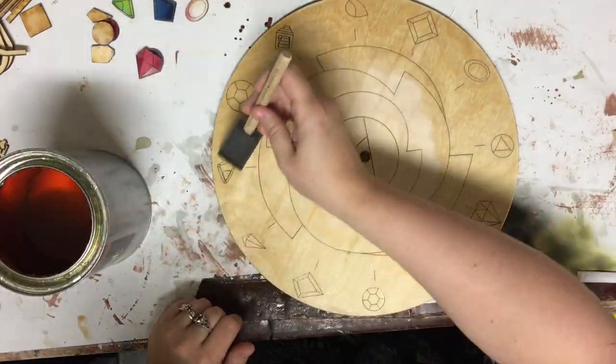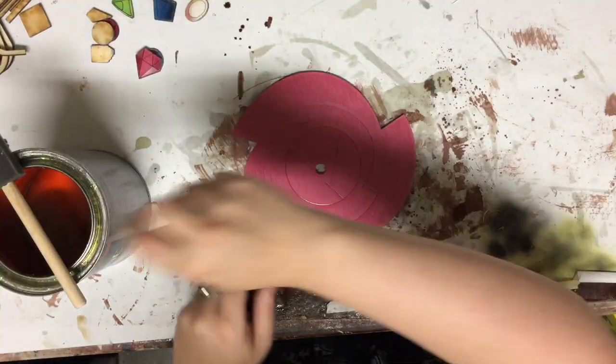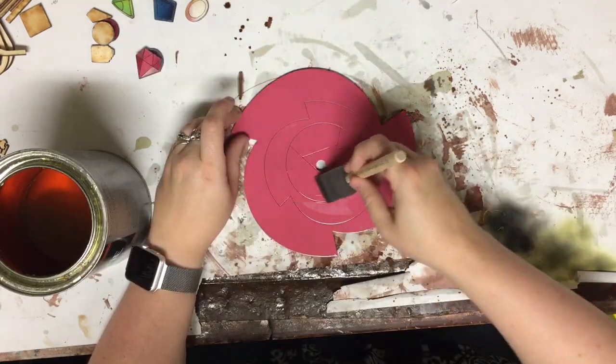First I apply the poly to the wood back piece. Now I'm applying it to the middle pink piece. The other two pieces were fine with one coat so I left them alone.